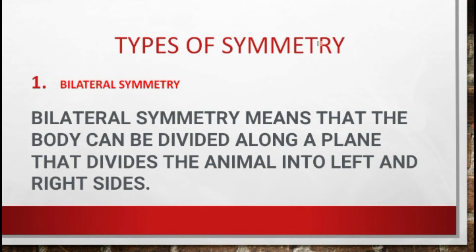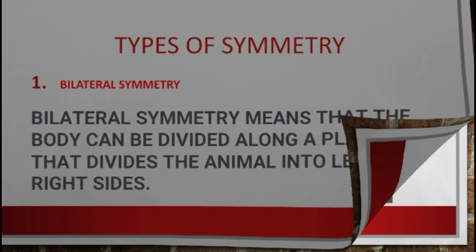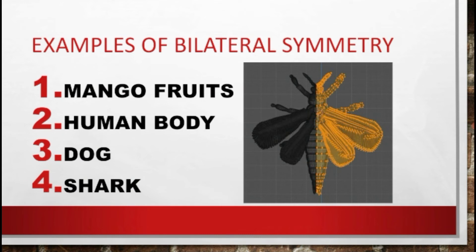Bilateral symmetry means that the body can be divided along a plane that divides the animal into left and right sides, or the body can be divided to produce mirror images. Looking at the picture, we can divide this organism into two equal parts — the dark parts and the colored parts — producing a mirror image.